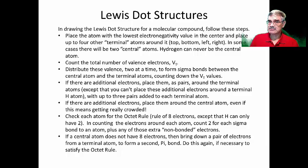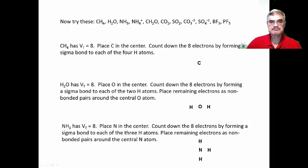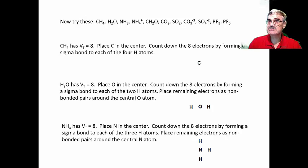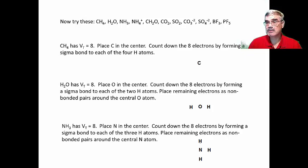These rules for drawing Lewis dot structures may seem overwhelming at first, but let's just do some examples and you'll see they're not so bad. In many cases, we can draw the Lewis dot structure using only the first few rules. Let's try CH4 (methane), H2O (water), NH3 (ammonia), NH4+ (ammonium), CH2O (formaldehyde), CO2 (carbon dioxide), SO2 (sulfur dioxide), the polyatomic oxyanions carbonate and sulfate, and then boron trifluoride and phosphorus pentafluoride. Let's begin with methane, CH4.